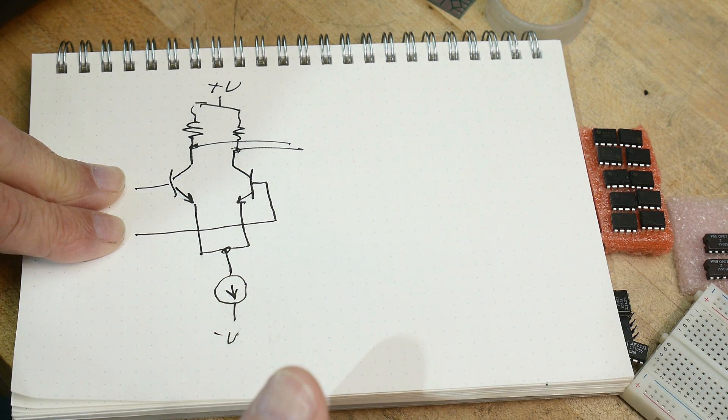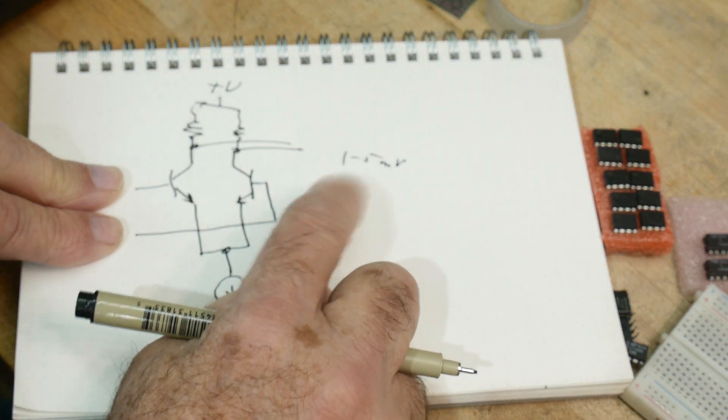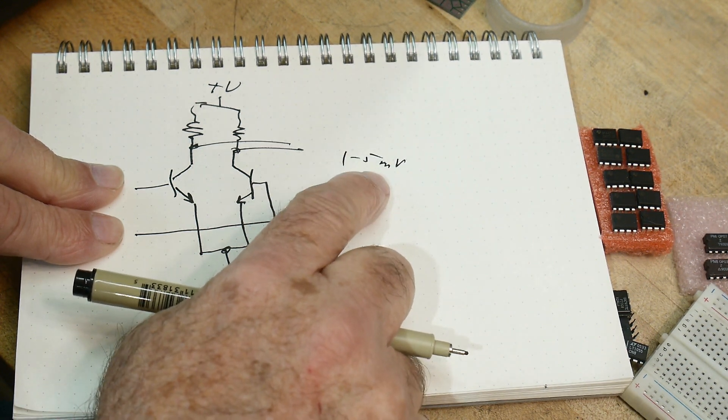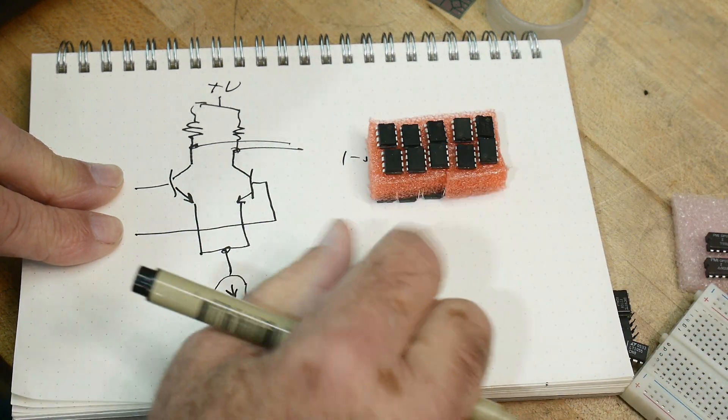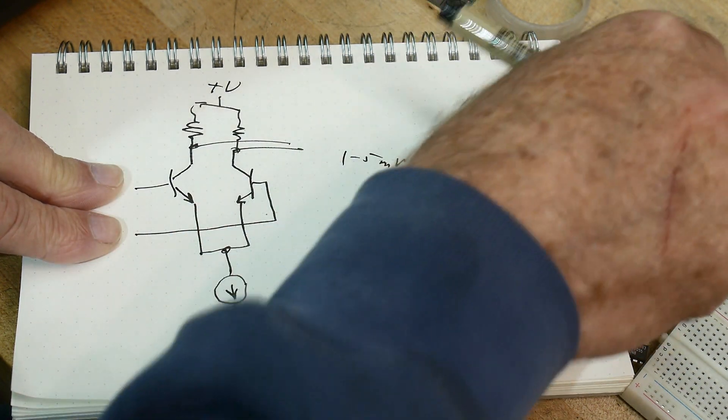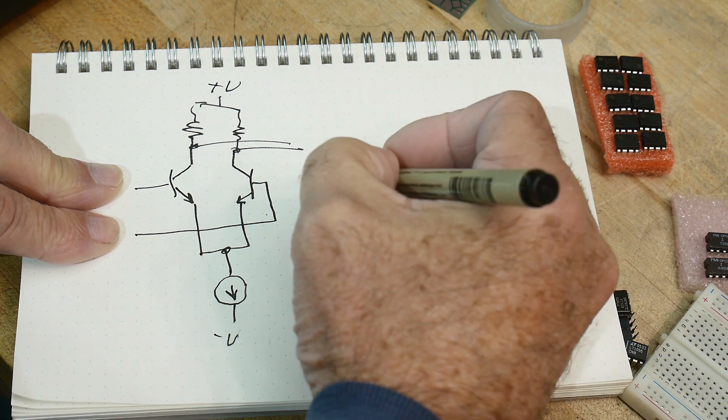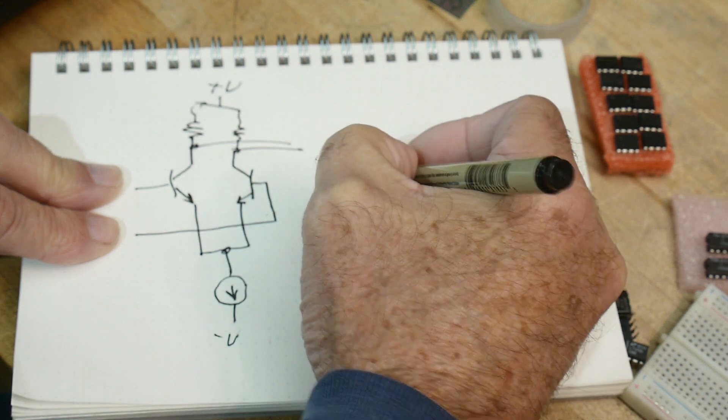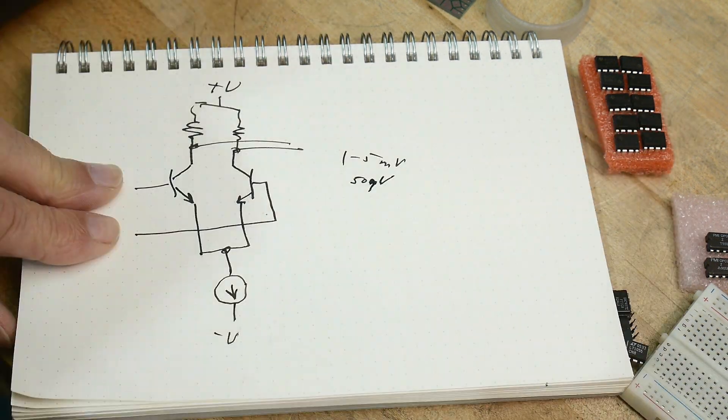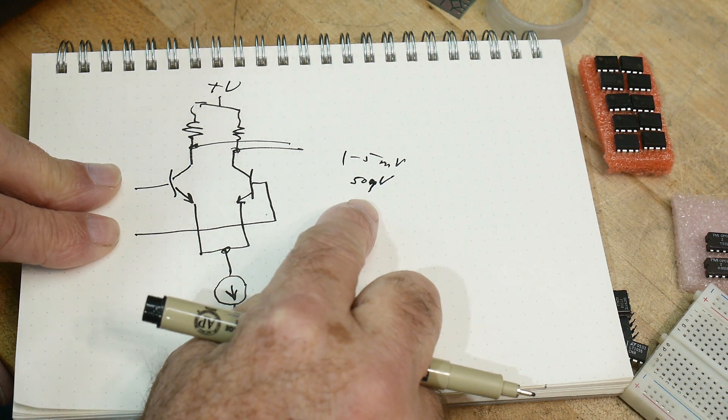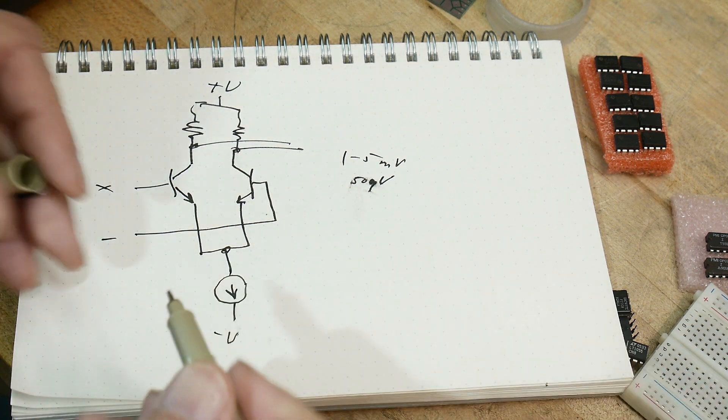So if you have these two at the exact same voltage, zero volts and zero volts, then you should have equal amounts of current going through both. Well you don't, because there's a little bit of mismatch. These transistors aren't exactly the same. These resistors aren't exactly the same. And so you'll get a little bit of offset.